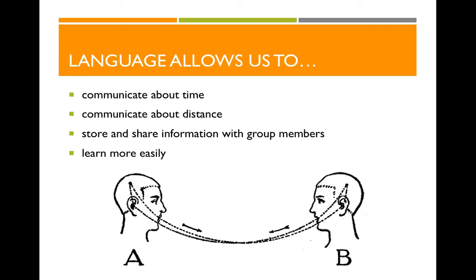Regardless of when language evolved, it clearly had great value to our ancestors just as it has value for us today. Language allows us to communicate about time and distance, but also helps us have a shared intelligence — a shared wealth of knowledge that would be impossible without language. We are able to store and share information with group members in a much bigger way than any other animal. We don't each have to individually hold all knowledge of how to exist in the world — I can have my information, you can have yours, and if I need someone else's, they just tell me. Collectively, we have greater knowledge than any single individual.